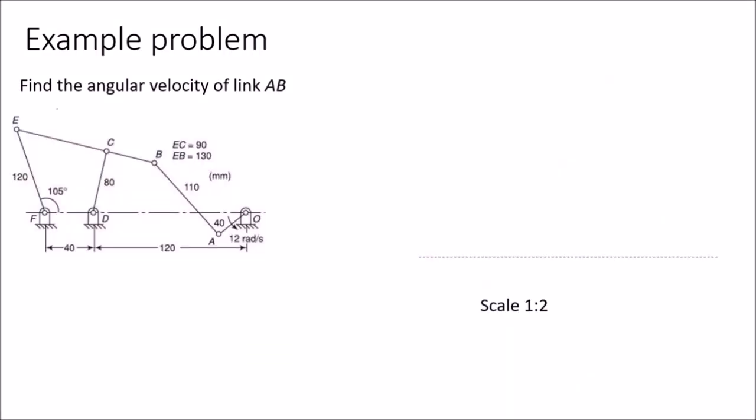In this video we will solve one exercise problem from the book Theory of Machine by SS Ratan. The problem is to determine the angular velocity of link AB. We will solve this problem using both the relative velocity method and the instantaneous center method.